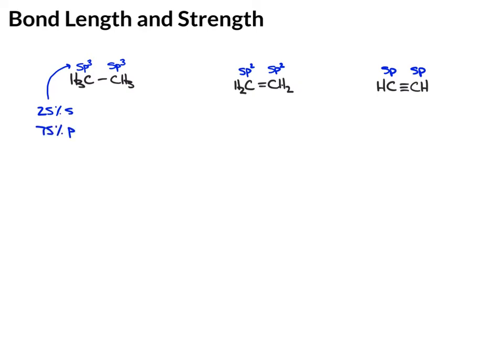In the case of sp2, it's a little harder to break down thirds, but it's about 33.3% s, 66.6% p. And then for sp, 50% s and 50% p.